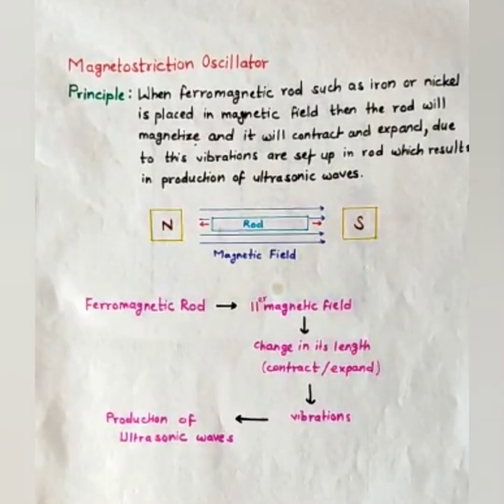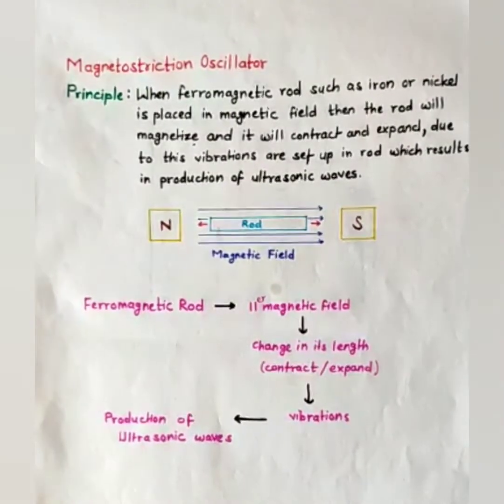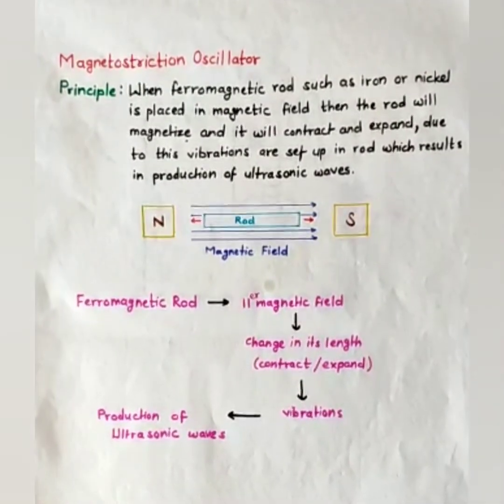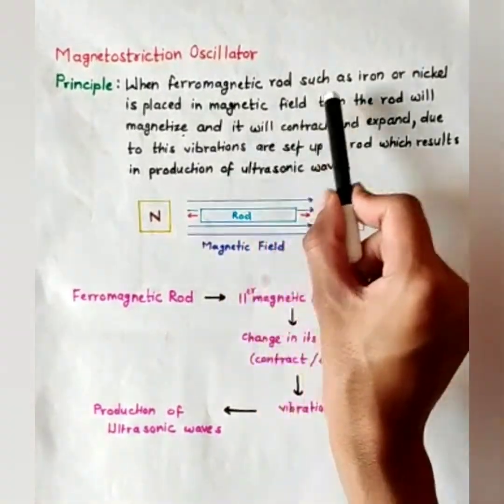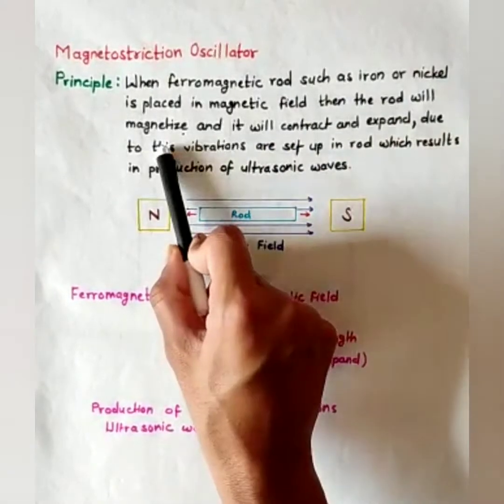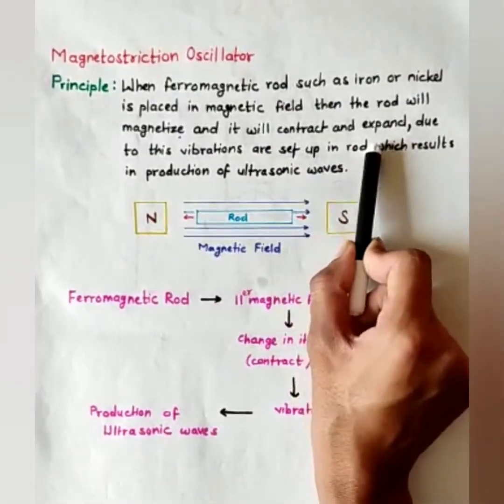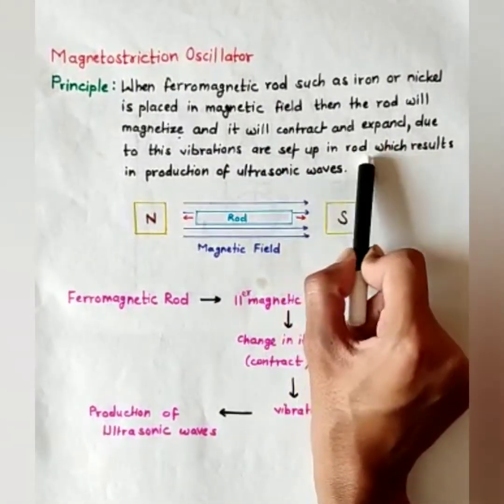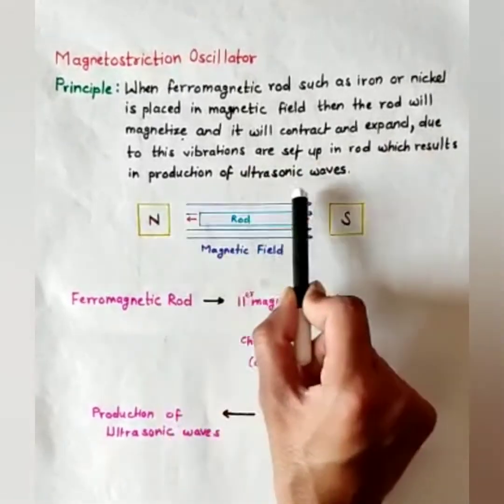This oscillator works on the principle of magnetostriction effect. The principle is when ferromagnetic rod such as iron or nickel is placed in magnetic field, then the rod will magnetize and it will contract and expand. Due to this, vibrations are set up in rod which results in production of ultrasonic waves.